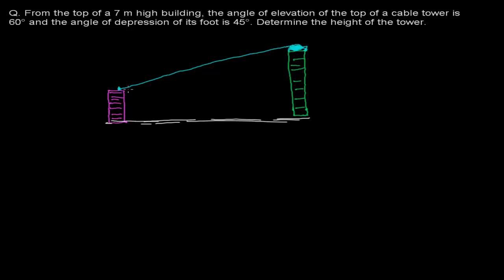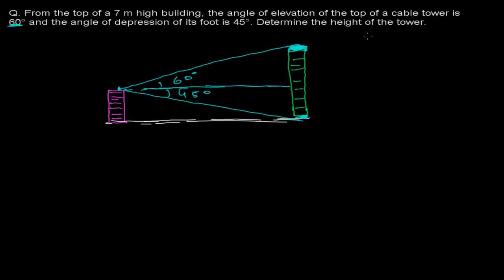When I look at the top of this cable tower, my angle of elevation with the horizon is 60 degrees. And the angle of depression of its foot is 45 degrees — from the same point, if someone is looking at the foot of the cable tower, the angle of depression with the horizon is 45 degrees. So we need to find out the complete height of this tower.